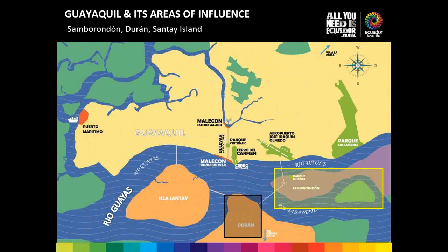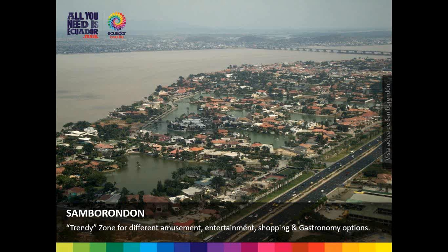Durán, on the opposite side of the river, receives products from roads coming from the highlands, then distributes them by river to Guayaquil. There's a lot of commerce happening here via bridges and river boats. Durán is also where the railway ends — clients taking the famous Tren Crucero from the highlands down to Guayaquil will arrive at the Durán station, then cross by bridge to the city. And then there's Santai Island — a new natural development we'll see in just a minute.